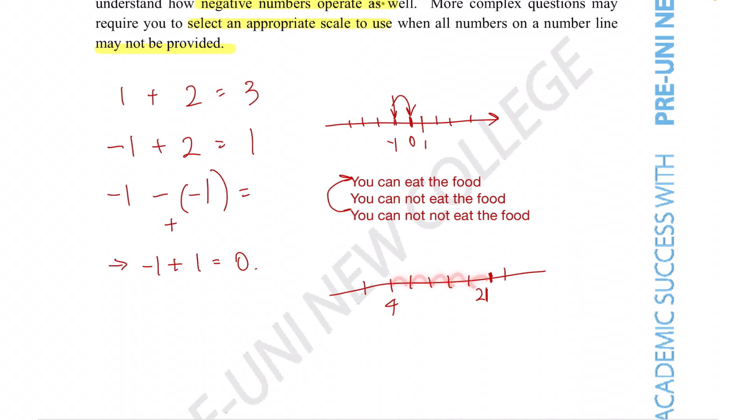So clearly there aren't 15 intervals in between, so each of these intervals must not be equal to one. So then how do we figure out what each of the intervals are equal to?